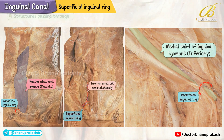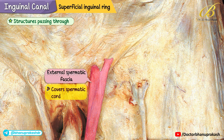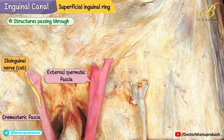Now let's look at the structures passing through. On the left side you can see the spermatic cord covered by the external spermatic fascia. On the right side, this external spermatic fascia has been removed, which allows us to see the cremasteric fascia and the ilioinguinal nerve more clearly.